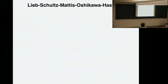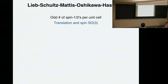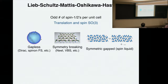This theorem was generalized to higher dimensions by Oshikawa and Hastings. The statement is very similar: the condition is that you have an odd number of spin-1/2 per unit cell, and again the Hamiltonian should preserve translation and spin-rotation symmetry. But in this case there's one more option, namely you can have a topological order which realizes a symmetry-protected topological liquid. So you have three options: either a gapless spectrum, or spontaneous symmetry breaking, or a topological spin liquid. These are the three options given by the Lieb-Schultz-Mattis theorem and its generalizations to higher dimensions.